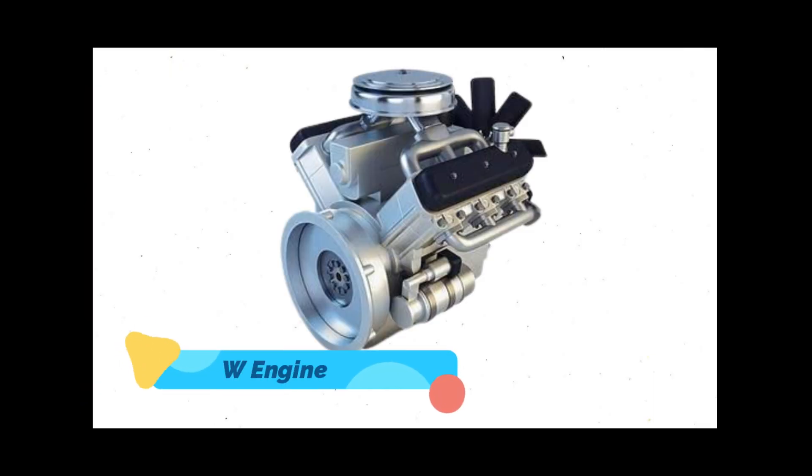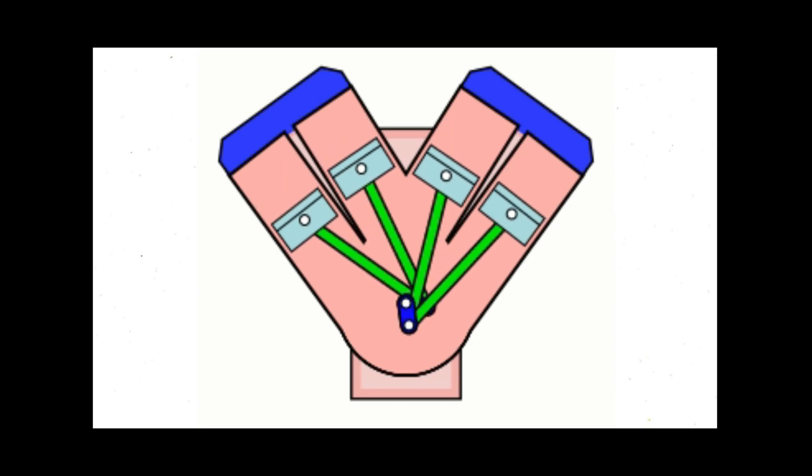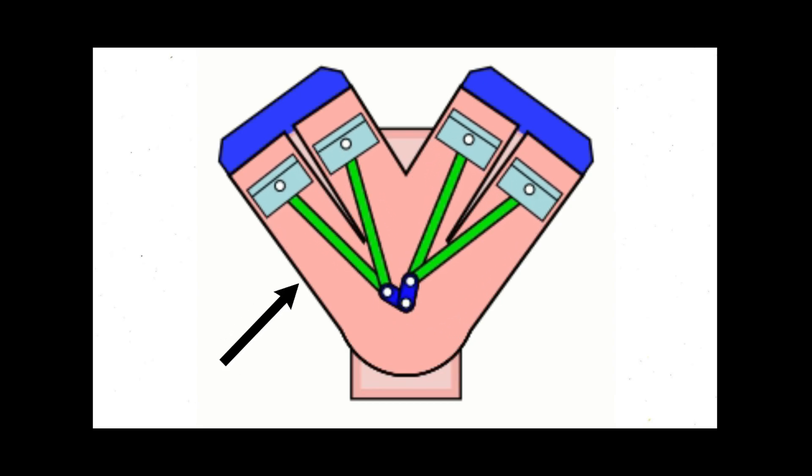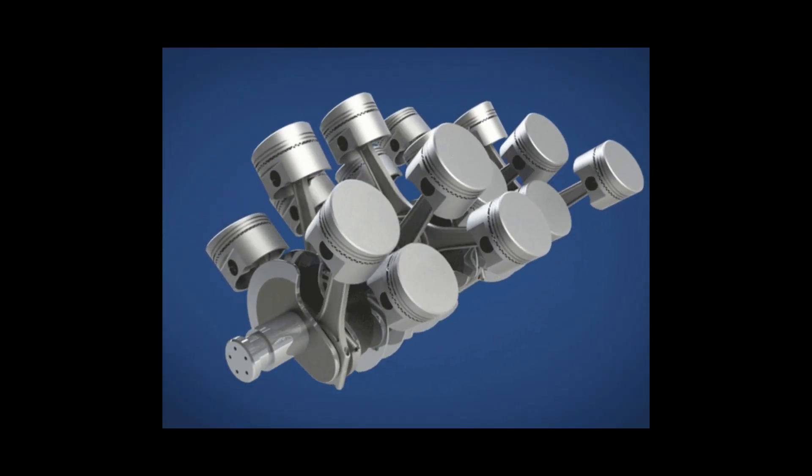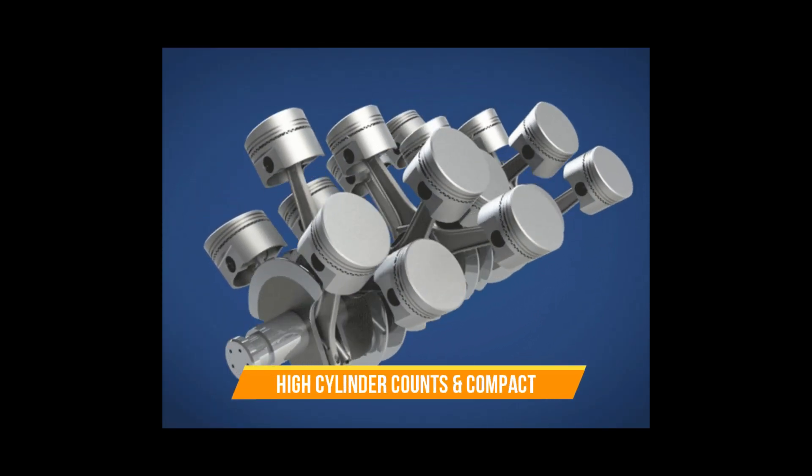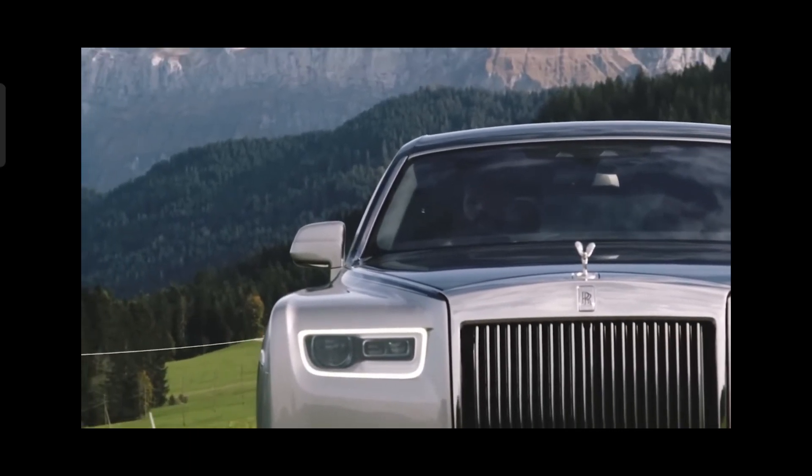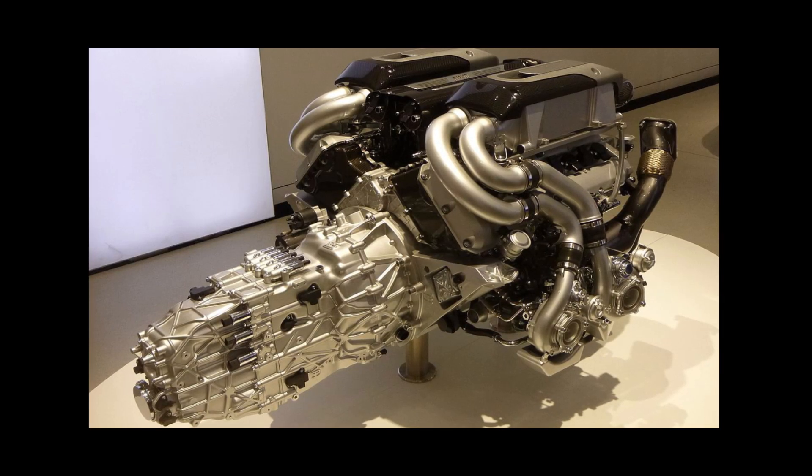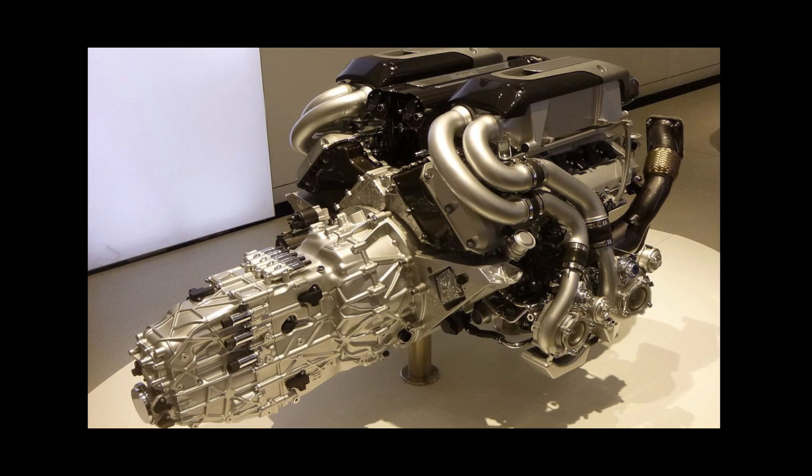W engines are a type of internal combustion engine that features a unique configuration in which the cylinders are arranged in a W shape. This design allows for a high cylinder count and compact packaging, making W engines popular in high performance and luxury vehicles. The W engine design is often used in cars that require high levels of power and torque, such as sports cars, supercars, and high-end sedans.